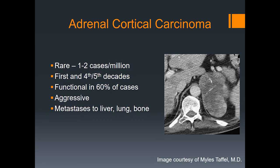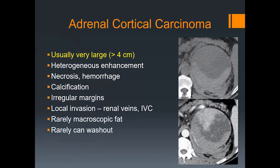Adrenal cortical carcinoma is fortunately rare but quite aggressive. It is functional in about 60% of cases; metastases commonly go to liver, lung, and bone. On imaging, these tumors are usually quite large with heterogeneous enhancement, often with necrosis and hemorrhage. An example shows a large mass with a necrotic center, peripheral enhancement, layering hemorrhage in the tumor and into the retroperitoneum, and calcifications. Margins are irregular, and commonly there is local invasion into the renal veins as well as the IVC. Rarely, adrenocortical carcinoma can contain macroscopic fat and rarely can washout.